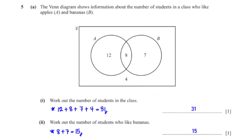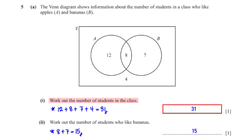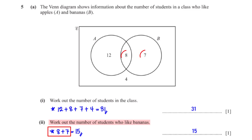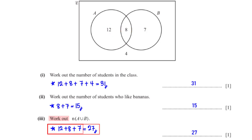The Venn diagram shows information about students who like apples and bananas. Work out the total number of students: 12 plus 8 plus 7 plus 4 equals 31. The number of students who like bananas is 8 plus 7 which equals 15. The number of students in A union B is 12 plus 8 plus 7 which gives 27.